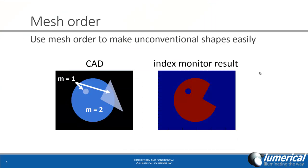So the mesh order property can also be used to make unconventional shapes very easily. For example, if you'd like to etch away a portion of any geometry, the easiest way would be to create another structure that overlaps with the original structure and then set the mesh order to 1.